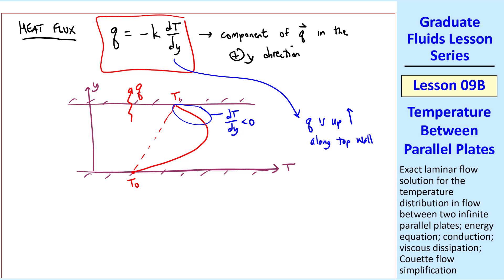Near the lower wall, dt dy is greater than 0, therefore q is less than 0, meaning it points down along the bottom wall. So again, q represents heat flux from the fluid to the wall.